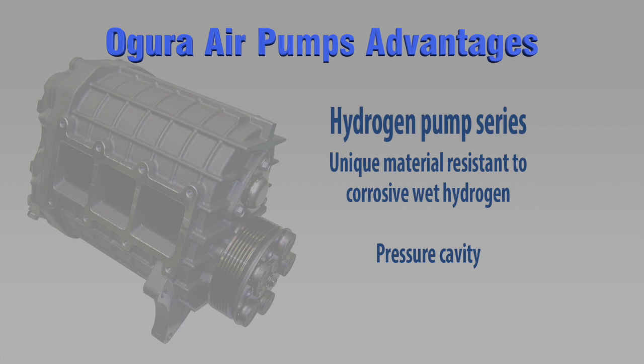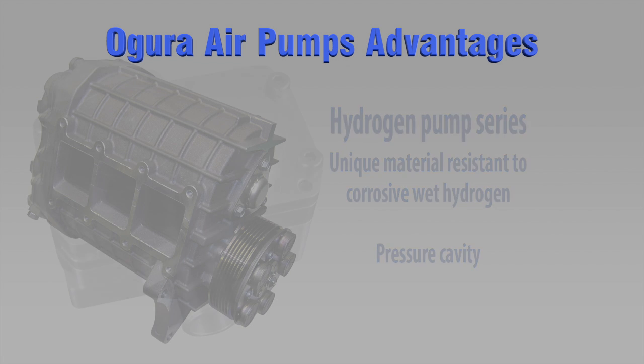These high efficiency blowers are well suited for running in wet hydrogen. These modified units have unique seals resistant to hydrogen and ionized water vapor. This also contains a secondary pressure cavity that keeps oil from entering the hydrogen stream.